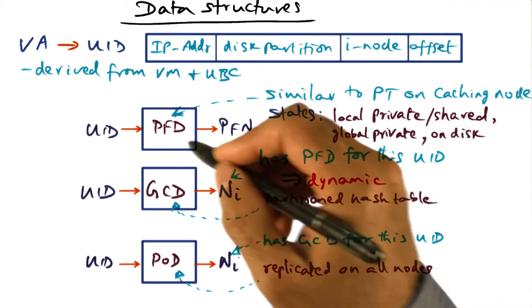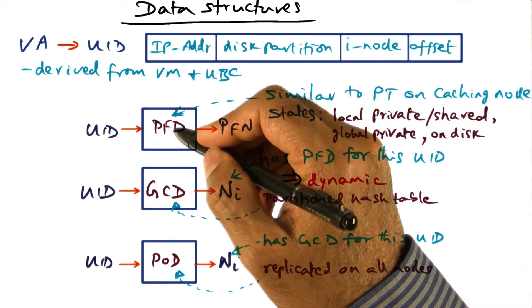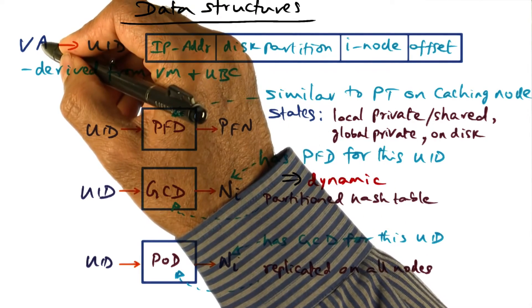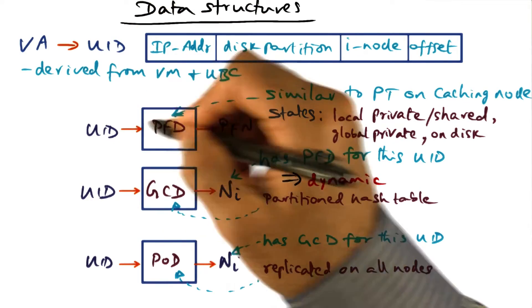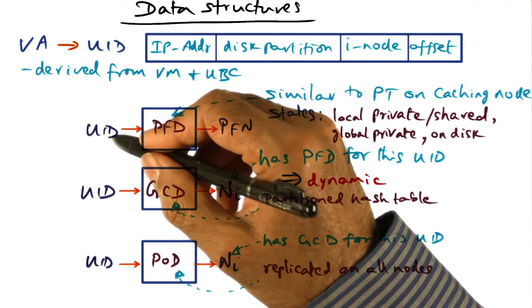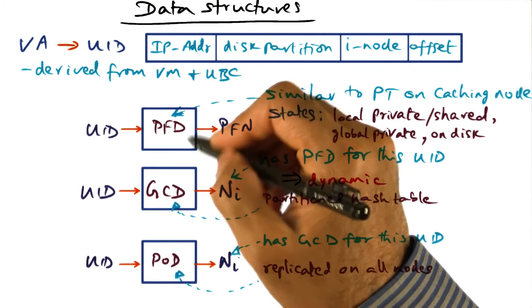It has a mapping between a UID, because your virtual address has been converted to a UID. Given a UID, it says, what is the page frame that backs that particular UID? That's this data structure.